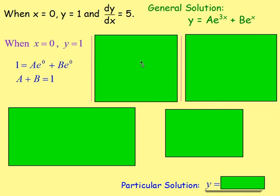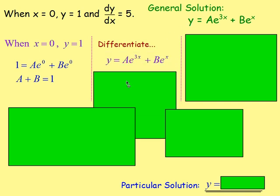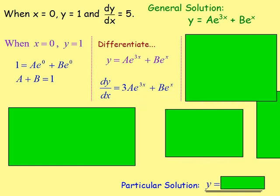We can't do anything else with that, so let's look at what else we're told. When x is 0, dy/dx equals 5. To get dy/dx, we have to differentiate. Differentiating y gives dy/dx, and ae^(3x) will keep e^(3x) but multiply by the derivative, giving 3ae^(3x). With be^(x), the derivative is just 1, so it stays as be^(x).